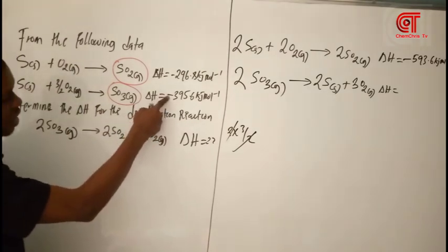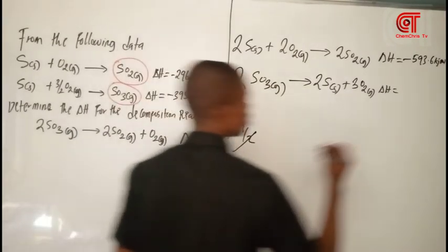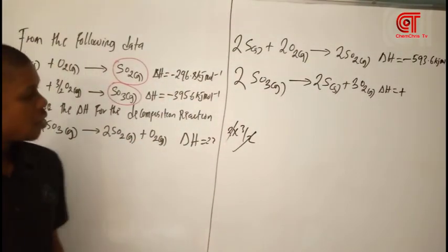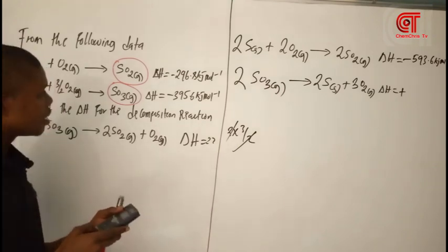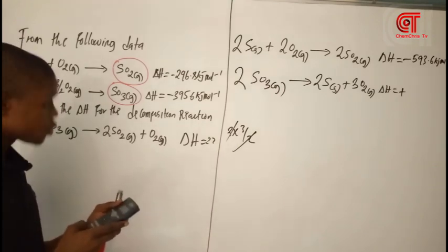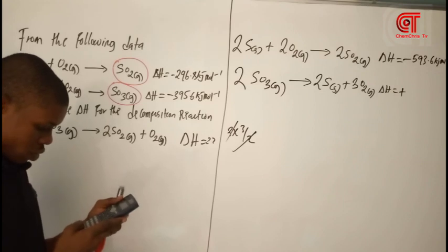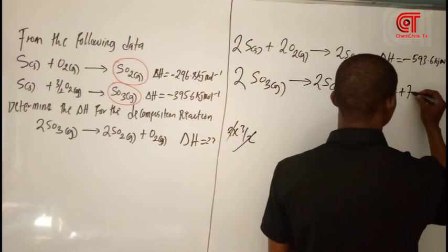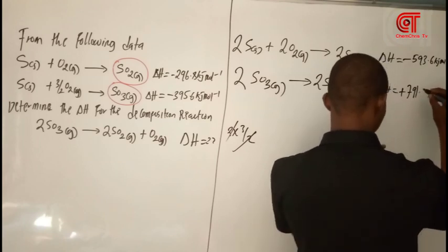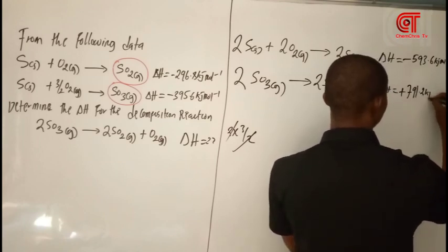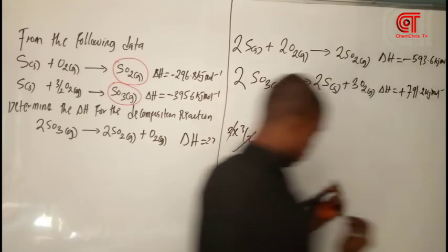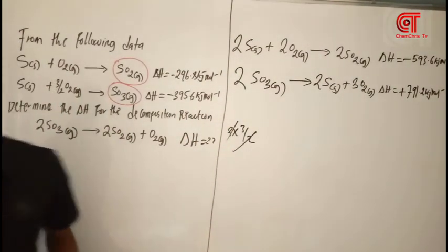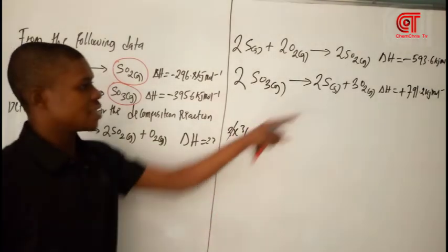So I'm going to multiply the delta H by two. The value is 395.6, so 395.6 times two gives 791.2 kilojoules per mole. That is the result of the second step.